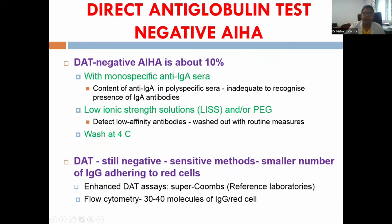Despite all efforts, in about 10 percent of cases the DAT may be negative. This can happen because warm AIHA, although basically IgG-mediated, may in some cases be mediated by the rare IgA antibody type.